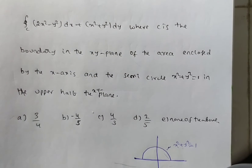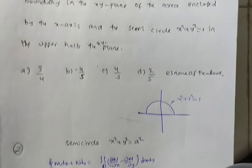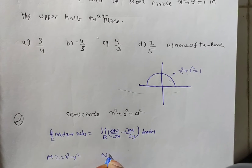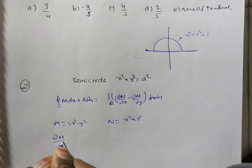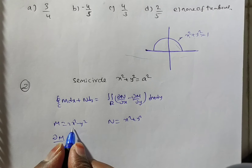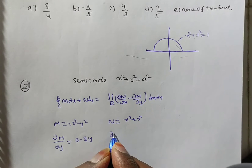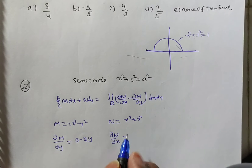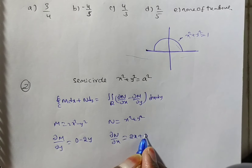From the given problem, M is the coefficient of dx and N is the coefficient of dy. So M = 2x² − y² and N = x² + y². Now we compute ∂M/∂y: differentiating M partially with respect to y, treating other variables as constant. The 2x² term is independent of y, so its derivative is 0. The −y² term gives −2y. So ∂M/∂y = −2y.